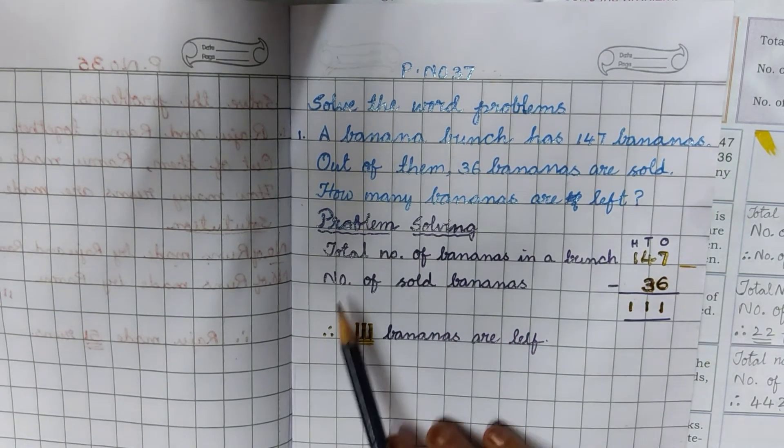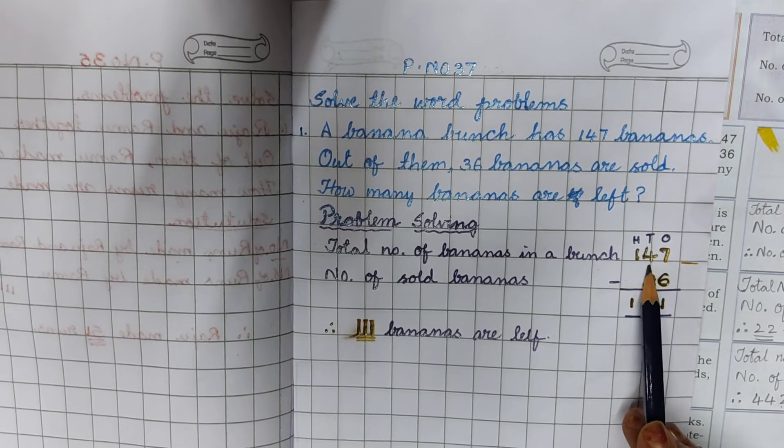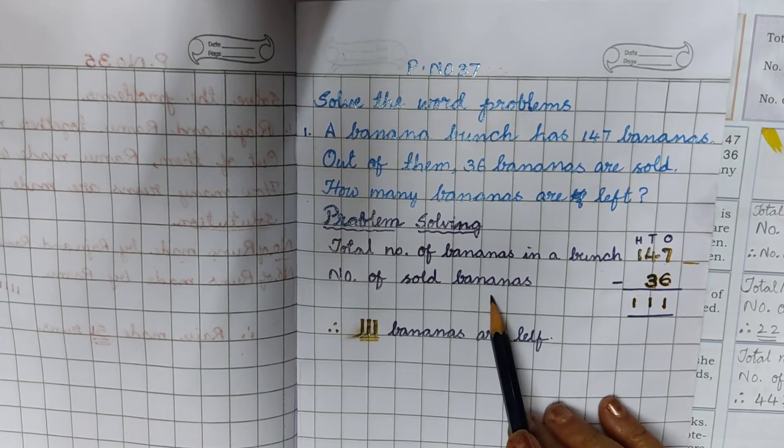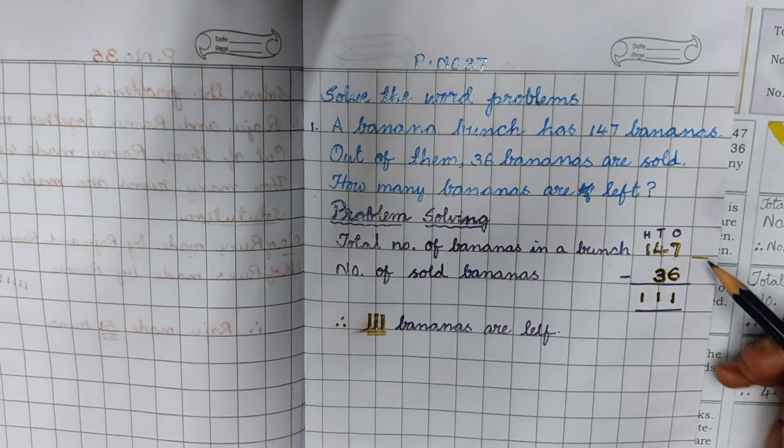Problem solving. Total number of bananas in a bunch? 147. Number of sold bananas. Number of bananas sold.